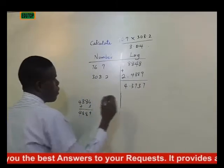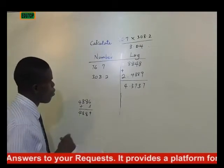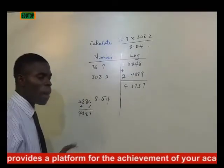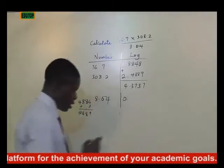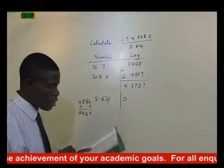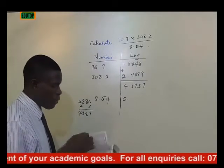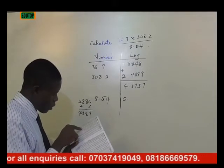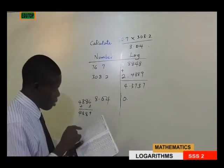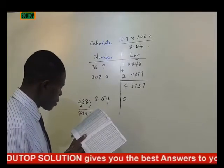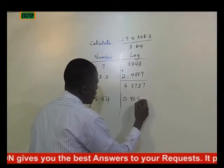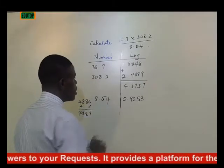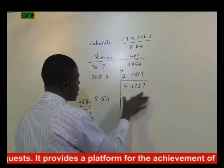So this is what we have. Then we stop here and deal with the denominator, which has 8.04. The denominator has 8.04. There is one digit number before the decimal, so it becomes 0 points. Then we go to our log reading of numbers and check for 80.04 — 80.04 gives 90.53. So we have 90.53 here. So this is the numerator and this is the denominator.